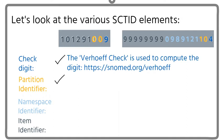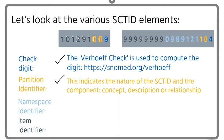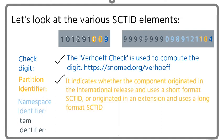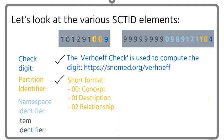The partition identifier indicates the nature of the SNOMED ID and the component. It indicates whether the component originated in the international release or originated in an extension. The short format concept, description and relationship looks slightly different to the long format concept, description and relationship.